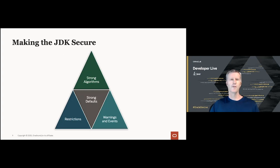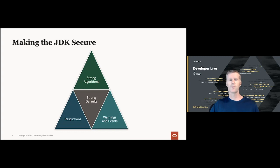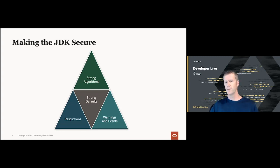I call this ongoing process of improvements 'making the JDK secure.' The improvements generally fall into one of four categories shown in this diagram: strong algorithms, strong defaults, restrictions, and warnings and events. In the next few slides I'll go into each of these in more detail and give examples of each.